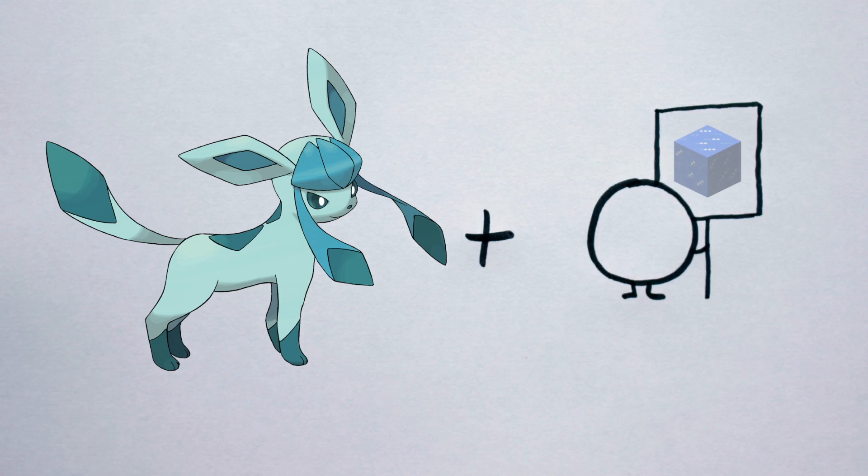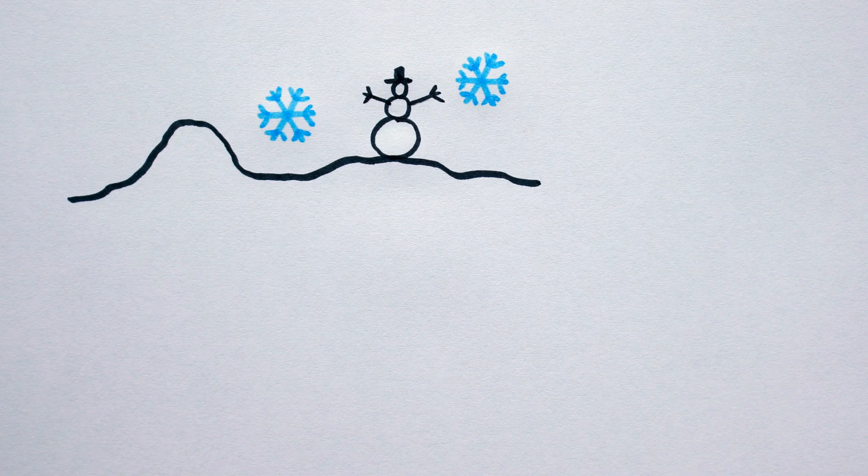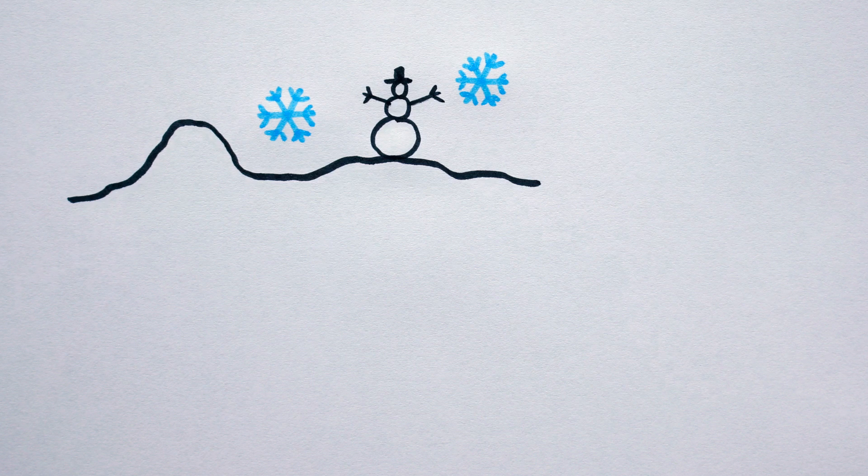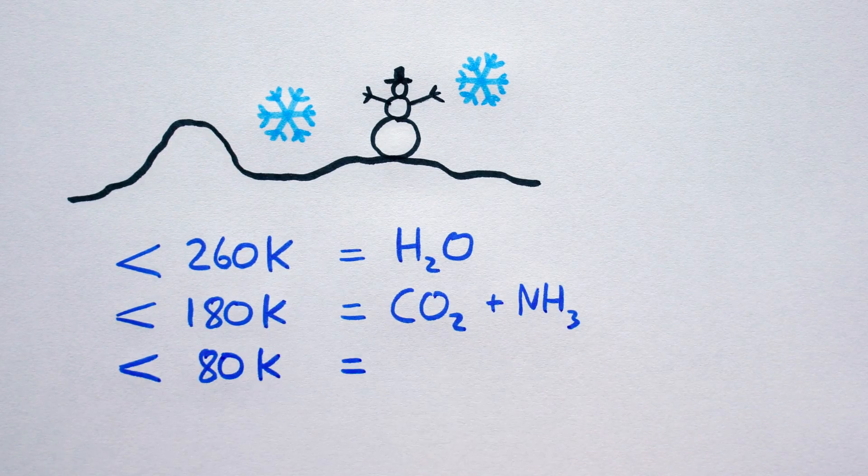Speaking of water ice planets, meet hypothetical planetary type number four, the ice-type pokeplanet. These are planets covered by an icy surface and a global cryosphere. Think larger versions of Pluto or Hoth. Depending on their temperatures, they may be composed of water ice, CO2 and ammonia ice, or methane ice.